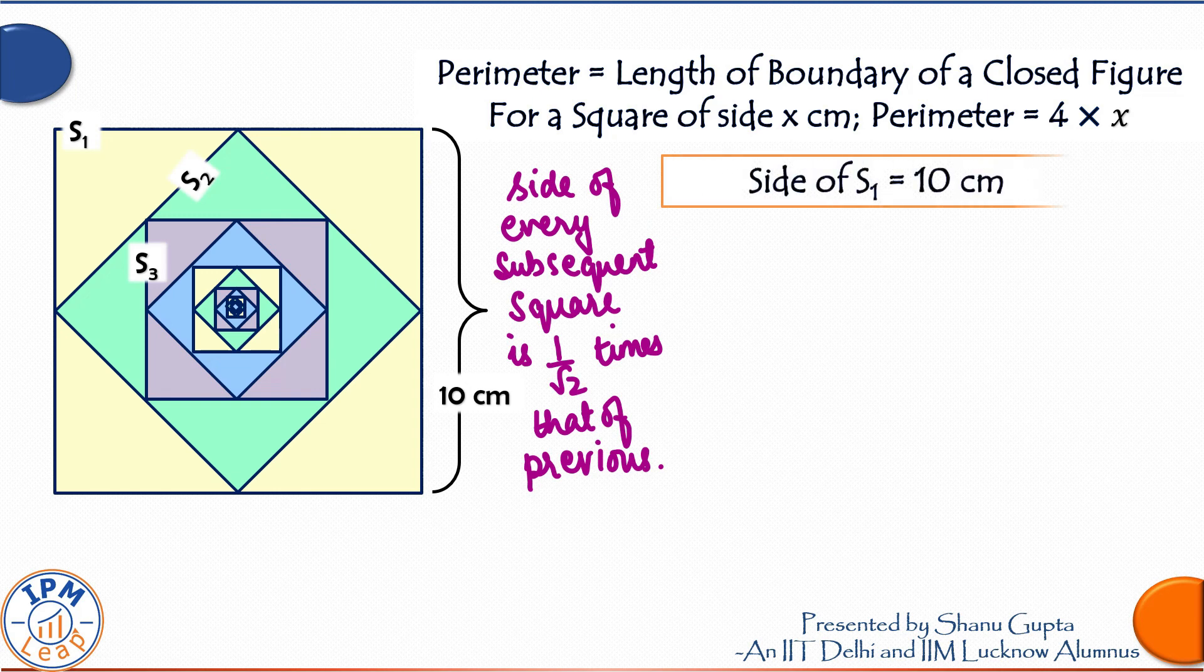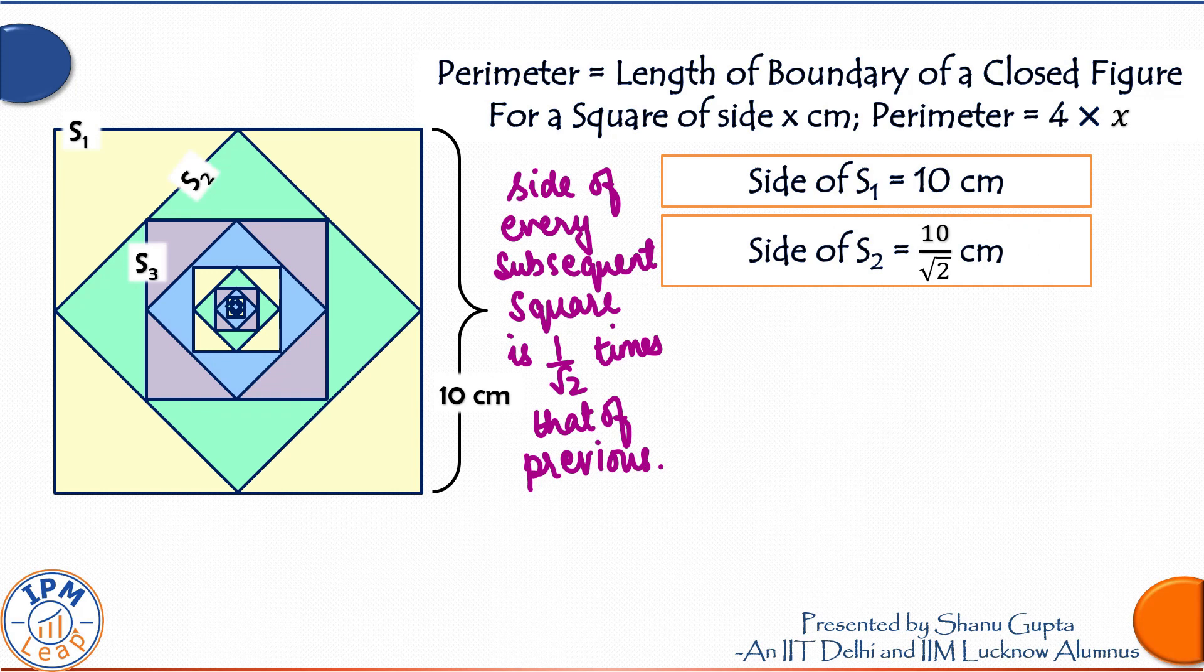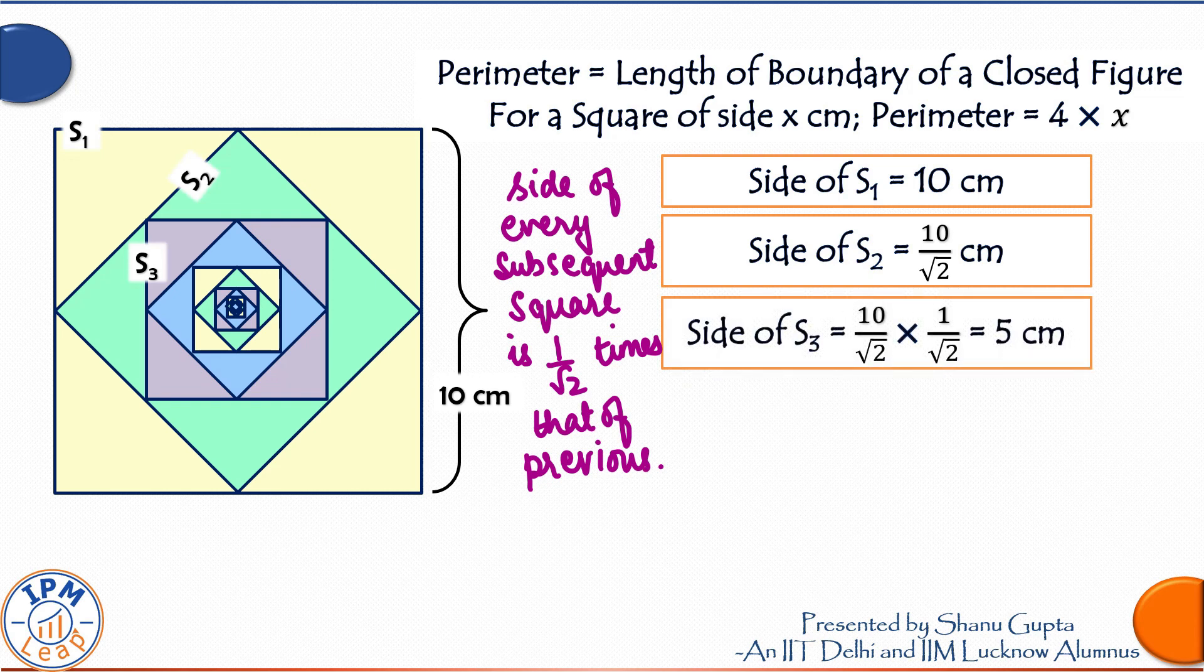Side of S1 is given as 10 centimeter. Side of S2 will be 1 upon root 2 times the previous one, that is 10 upon root 2 centimeter. Similarly, side of S3 will be 1 upon root 2 times the previous one, that is 10 upon root 2 into 1 upon root 2, which is equal to 5 centimeter and so on.